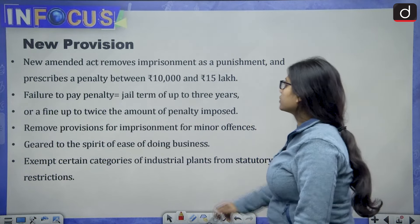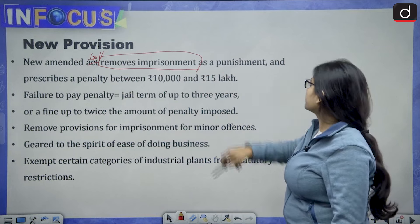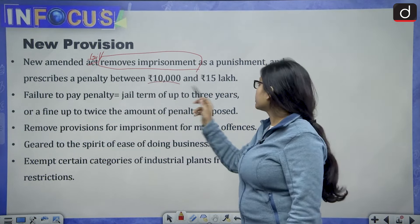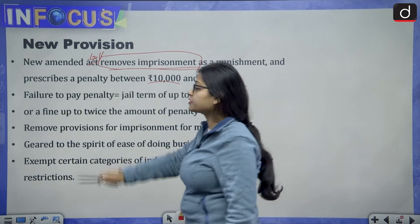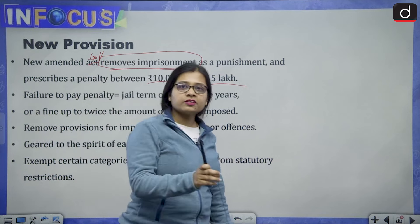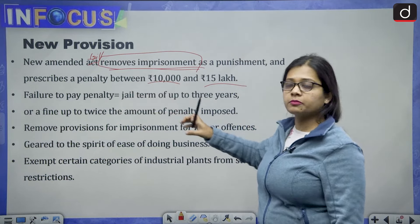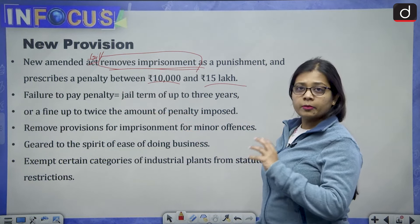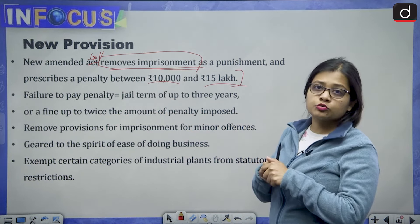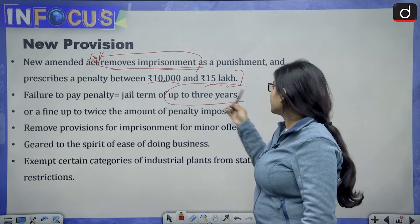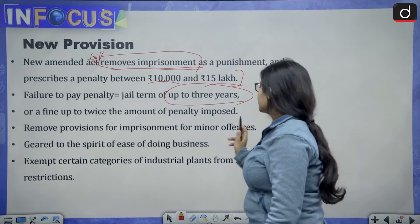The new amended bill removes imprisonment as a punishment for minor offenses and prescribes a penalty between 10,000 rupees to 15 lakh rupees. This is a key headline of the bill. If a person fails to pay the penalty, a jail term of up to 3 years or a fine of up to twice the amount of the penalty imposed may apply.